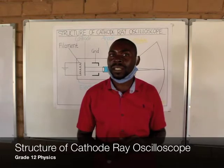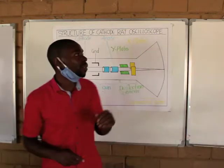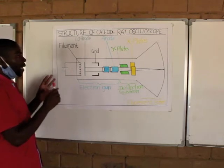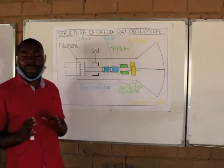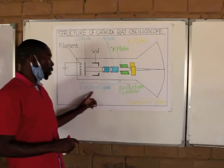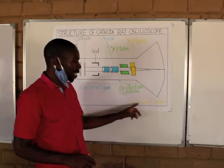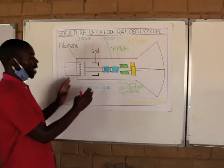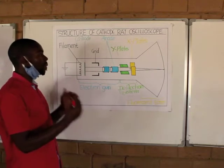Behind me on the chart, I want you to follow me and then lay something out of it. The cathode ray oscilloscope is made up of three parts, or it is divided into three parts. It is divided into the electron gun, deflection system, and fluorescent screen. Each of these has got its own smaller structures.